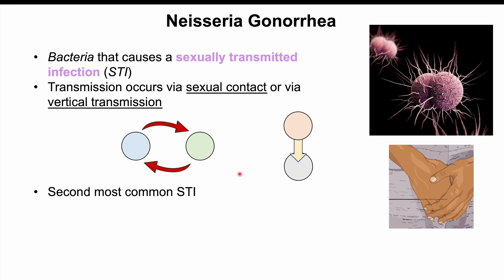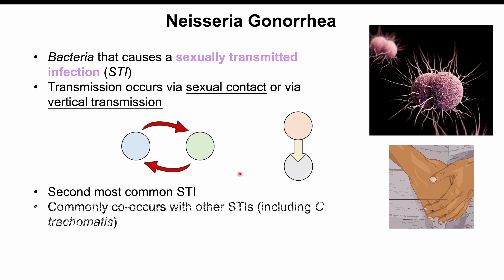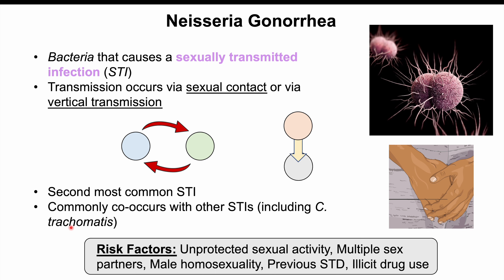Gonorrhea is the second most common STI and commonly co-occurs with other STIs, especially Chlamydia trachomatis. Risk factors for infection include unprotected sexual activity, multiple sex partners, male homosexuality, previous sexually transmitted infections, and illicit drug use.